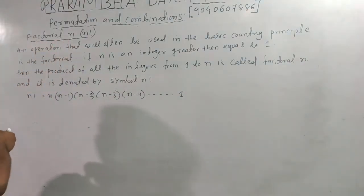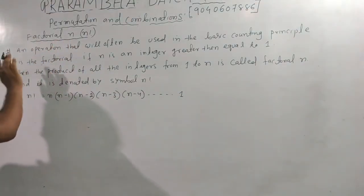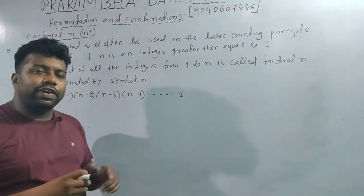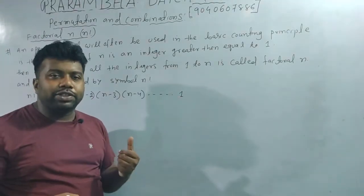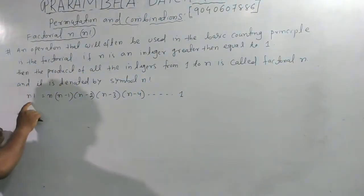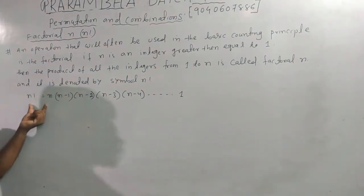What does factorial mean? Here we get the definition, then we can define it. So first we get the definition. Factorial is represented by n with an exclamation mark — we call it n factorial.